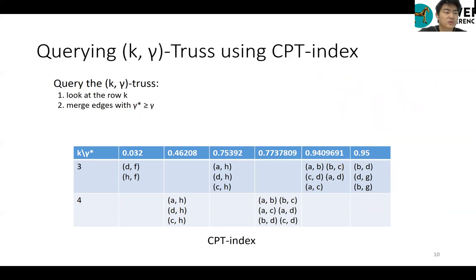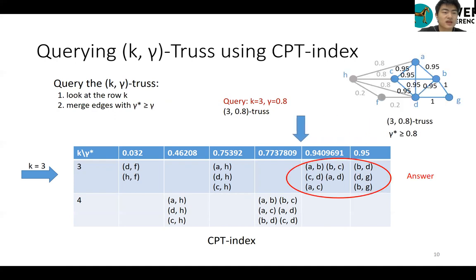Based on our index, we can answer queries quickly. For example, if we want to get the 3-0.8-trust, we can look at the row with k equals 3, and merge all edges with probabilistic trustness greater than or equal to 0.8. Our query algorithm takes optimal answer time, where the answer is the size of retrieved k-gamma-trust.